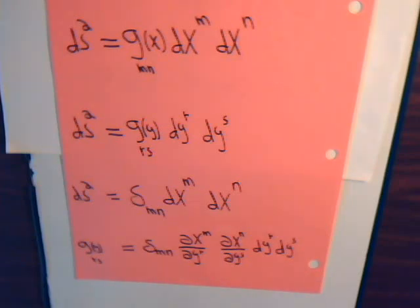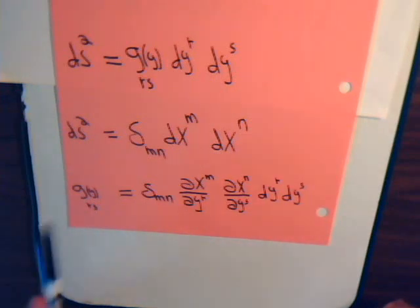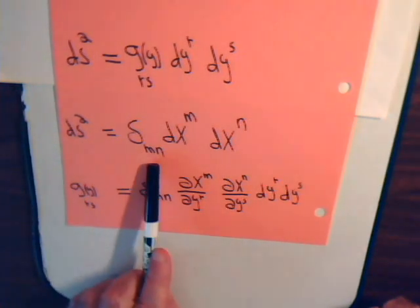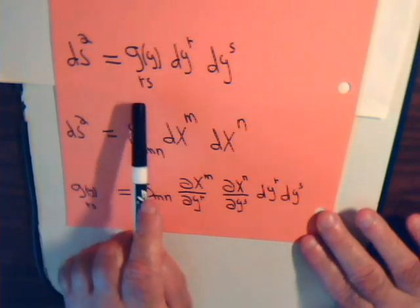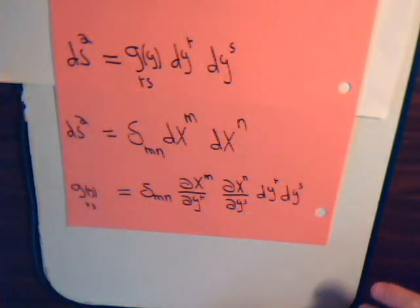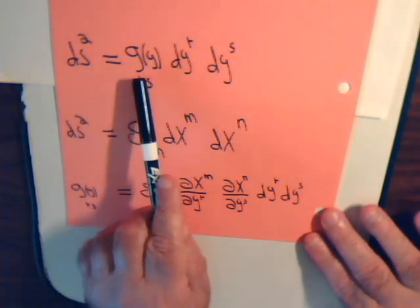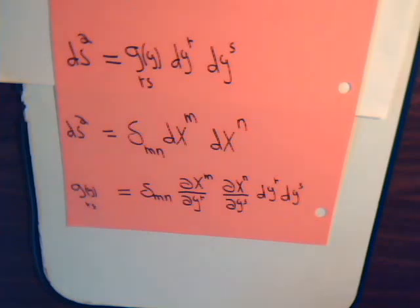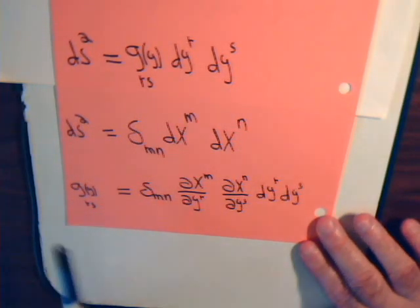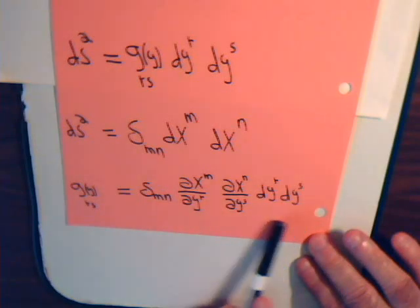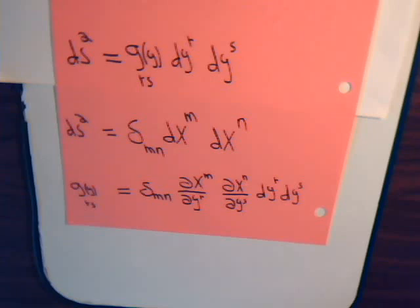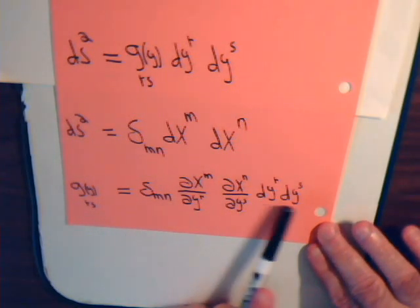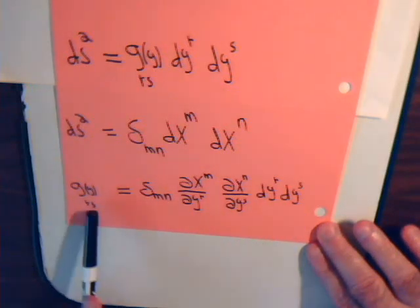If we're dealing with Cartesian coordinates, then ds squared is real simple — it's just the Kronecker delta times dxm dxn. In the last video, we showed that the metric tensor g with subscripts rs is defined by this description on the right side of the equation. We didn't so much derive it as we just encountered it in the equation and said this is what is called the metric tensor.